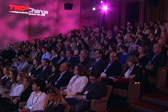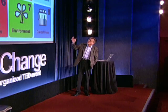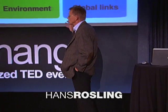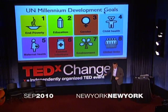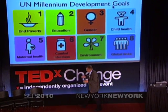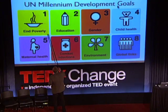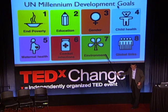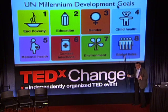We are here today because the United Nations have defined goals for the progress of countries. They're called Millennium Development Goals. There are eight of them, and by specifying eight different goals, the UN has said that there are so many things needed to change in a country to get a good life for people: end poverty, education, gender, child and maternal health, control infections, protect the environment, and get good global links between nations from aid to trade.